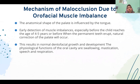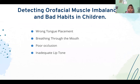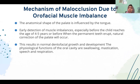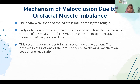Detecting orofascial musculoskeletal imbalance in children includes: tongue placement, breathing through the mouth, malocclusion, and inadequate lip tone. The mechanism of malocclusion formation is due to orofascial musculoskeletal imbalance. The anatomical shape of the palate is influenced by the tongue. Early detection of musculoskeletal imbalance, especially before the child reaches the age of 4–5 years or before permanent teeth erupt, allows natural correction of the palate. This results in normal orofascial growth and development of physiological functions of the oral cavity: swallowing, mastication, speech, and respiration.